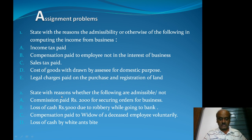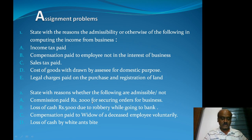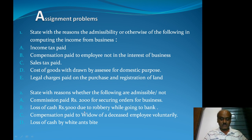Next problem: state with reasons whether the following are admissible or not. Commission paid rupees 2,000 for securing orders for business — this is allowable. Loss of cash rupees 5,000 due to robbery while going to the bank for a deposit — this is allowable.